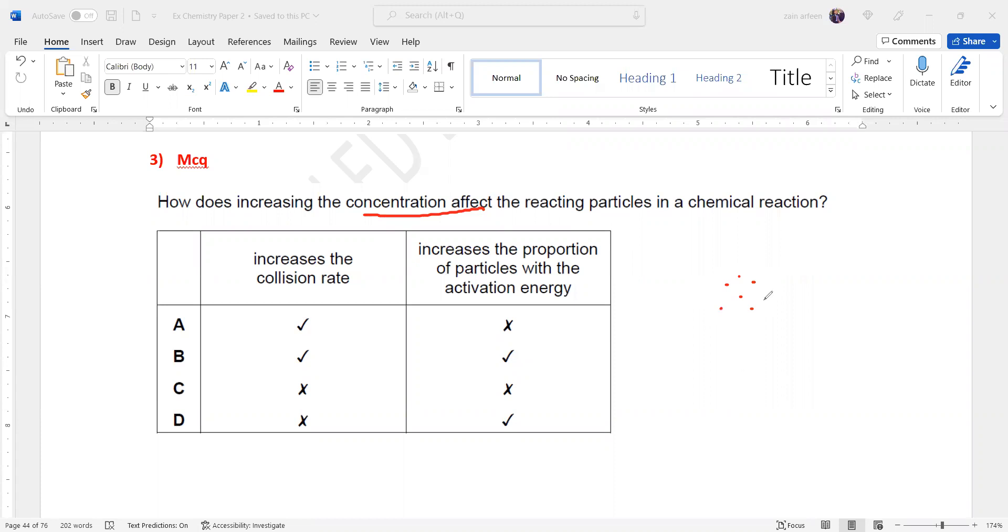Like for example, if I have small concentration, few collisions. If I have high concentration, more collisions.